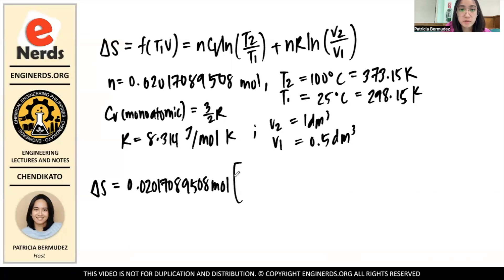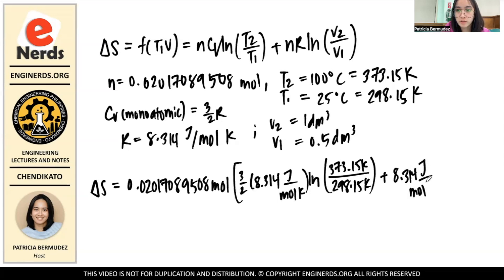So we just substitute all these values here. So delta S would become n, so it's just 0.020170895081 mole times Cv which is 3/2, then R is 8.314 joules per mole kelvin, then ln of 373.15 kelvin over 298.15 kelvin, and then you add R because n is already factored out - 8.314 joules per mole kelvin and then ln of 1 dm³ over 0.5 dm³.